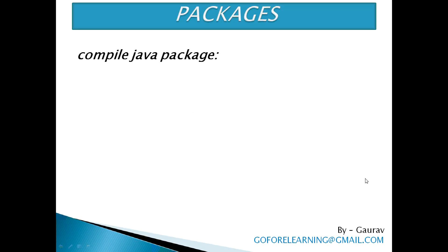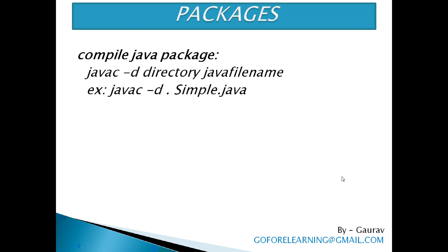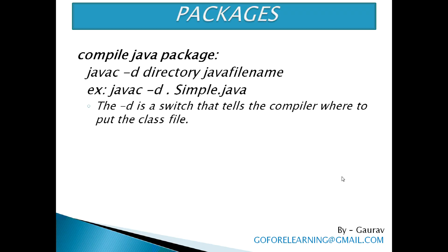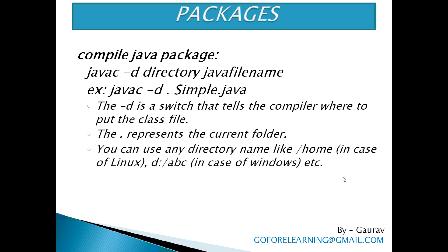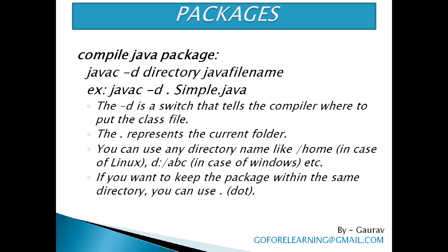Now, how to compile Java packages? We have to write this syntax: javac -d directory javafilename. For example: javac -d . simple.java. Here the -d is a switch that tells the compiler where to put the class file, i.e., it represents the destination. The dot represents the current folder. You can use any directory name like /home in case of Linux, or B:\abc in case of Windows. If you want to keep the package within the same directory, you can use the dot operator.